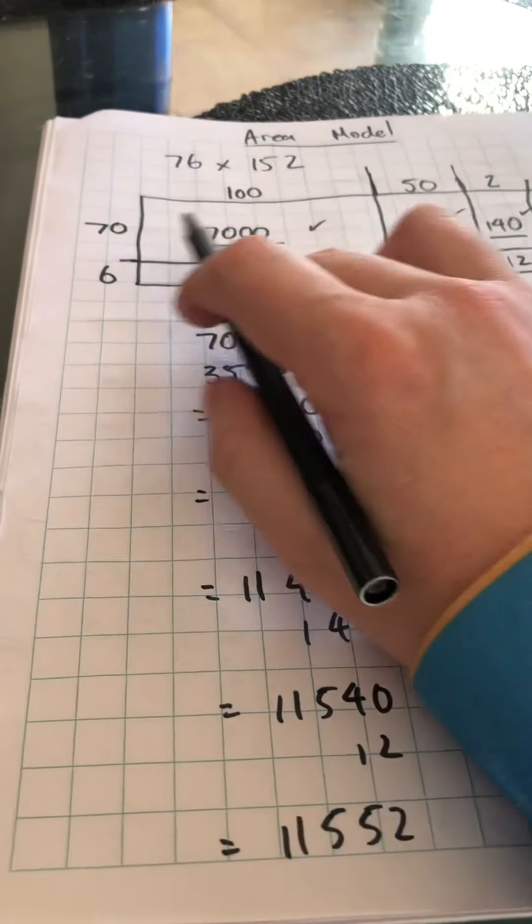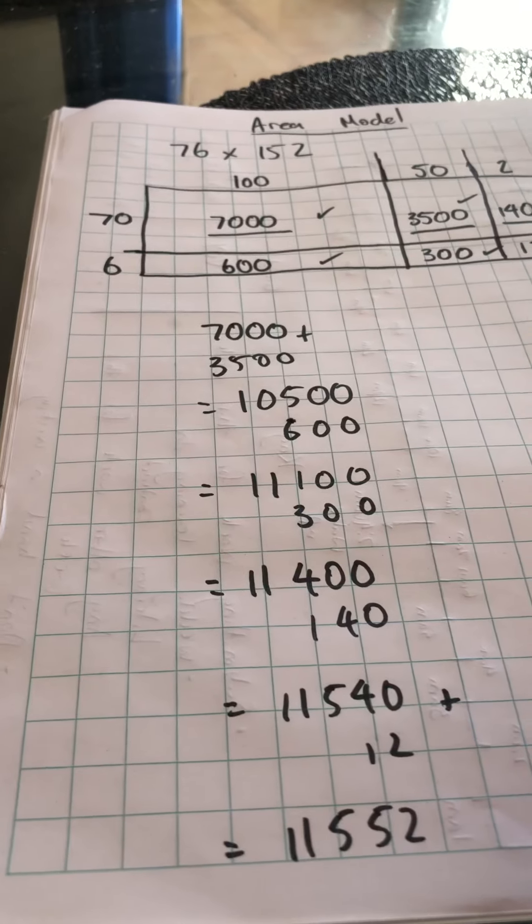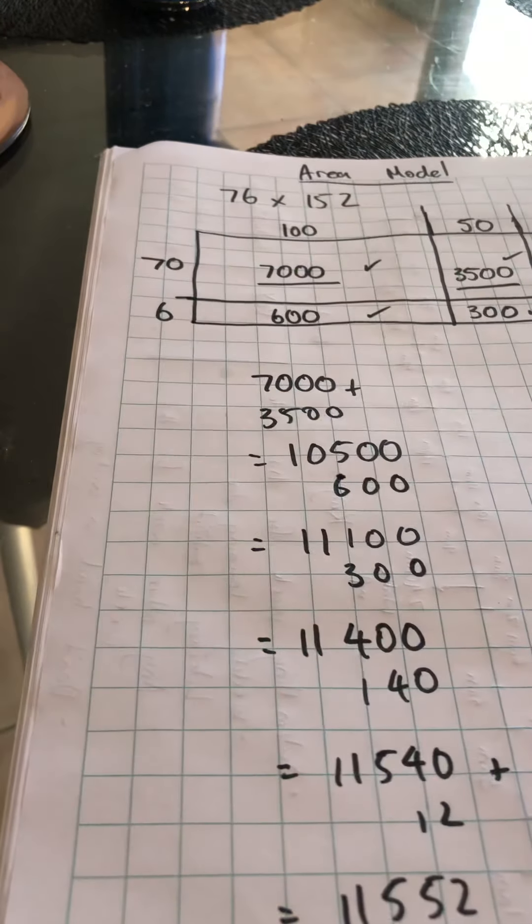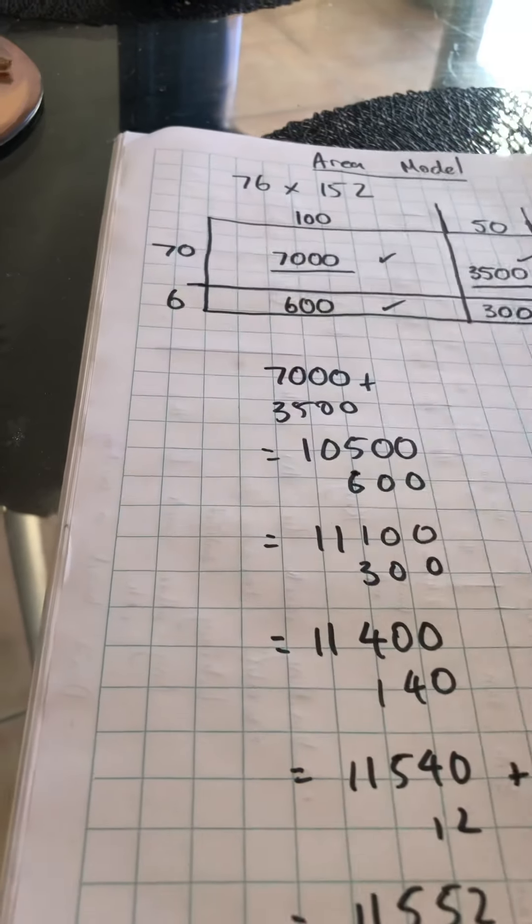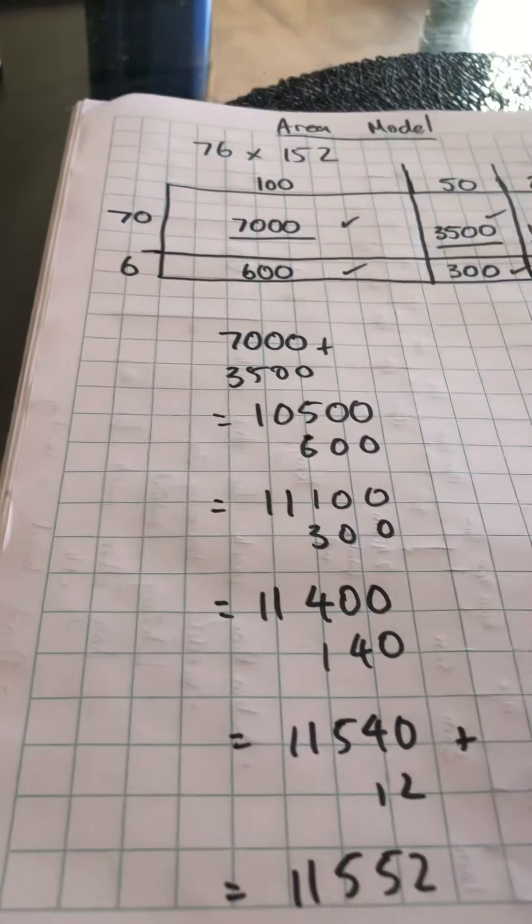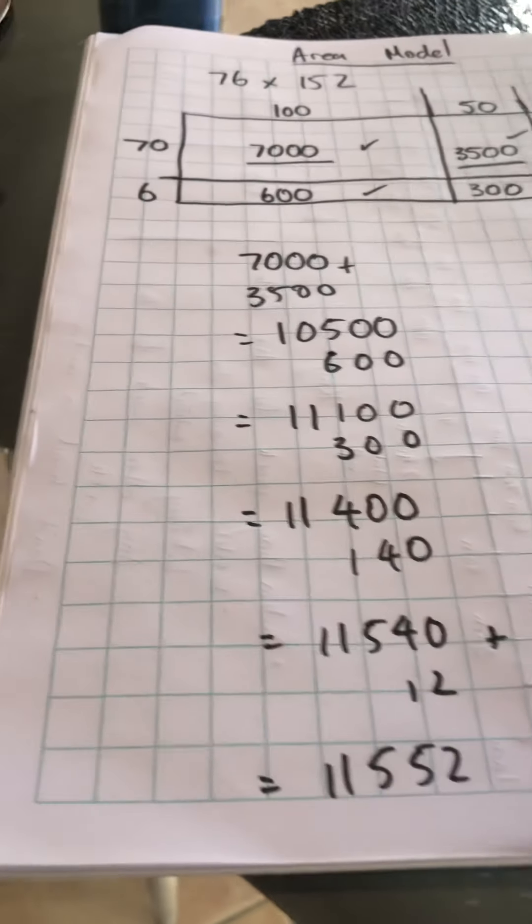So using the area model, it helps you break up the total of the multiplication to make it a bit easier for yourselves, multiplying by nice round numbers. And the last step is, after you've figured out the boxes and done all the multiplication, you just need to make sure that you add all the totals inside the boxes together to get to your answer. I hope this helps.